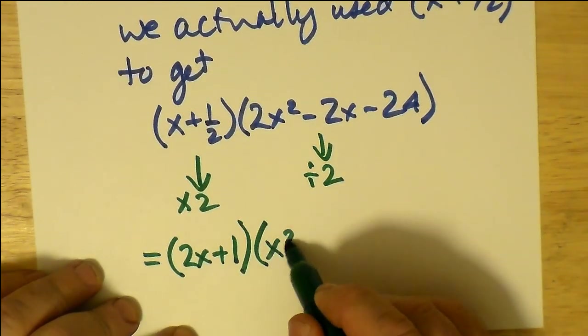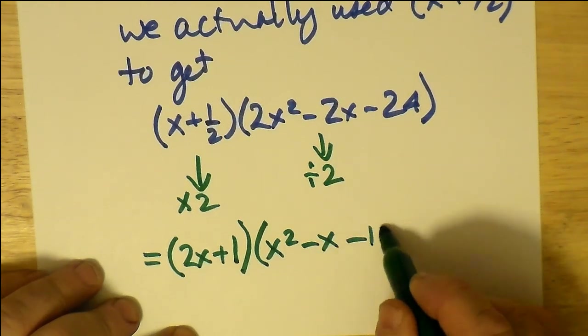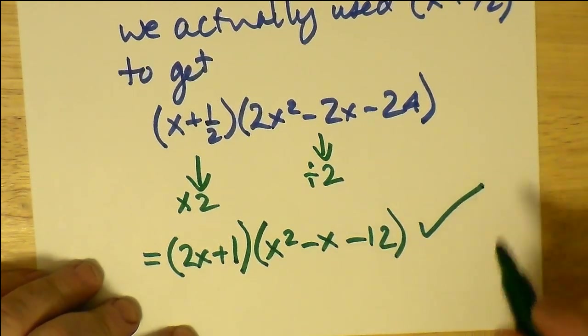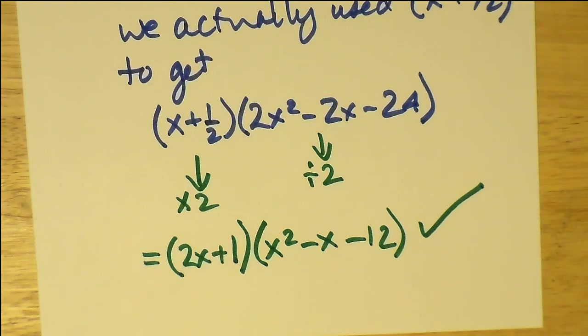And there you have it: the correct factorization by synthetic division and a little bit of insight gives you (2x + 1) multiplied by (x² - x - 12). Exactly.